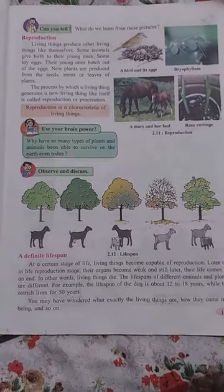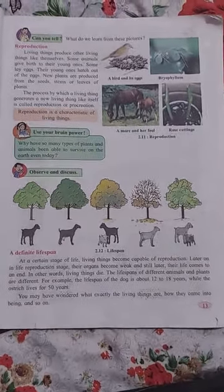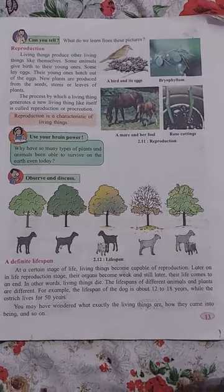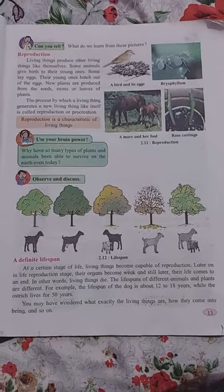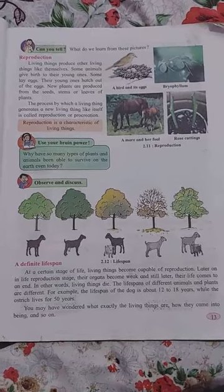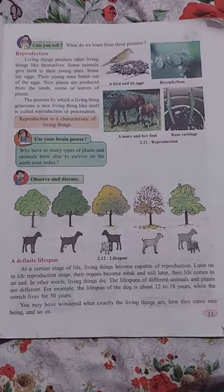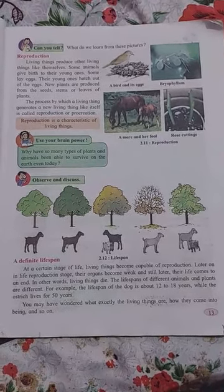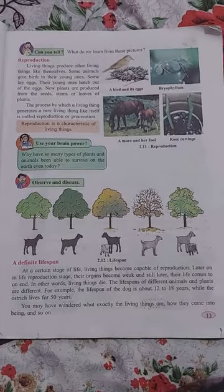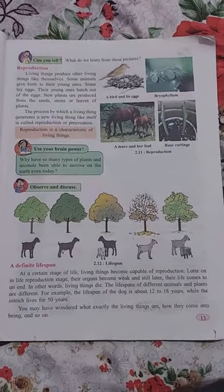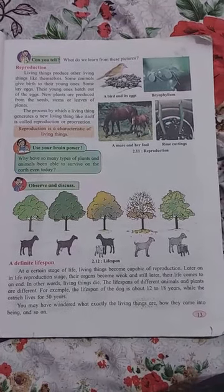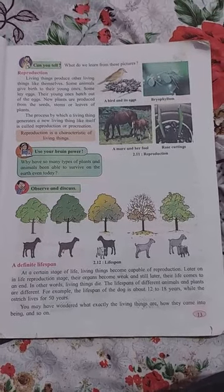A definite lifespan. At a certain stage of life, living things become capable of reproduction. Later on, in the post-reproduction stage, their organs become weak and still later, their life comes to an end — in other words, living things die. The lifespan of different animals and plants are different. For example, the lifespan of a dog is about 12 to 18 years, while the ostrich lives for about 50 years. You may have wondered what exactly living things are, how they come into being, and so on.